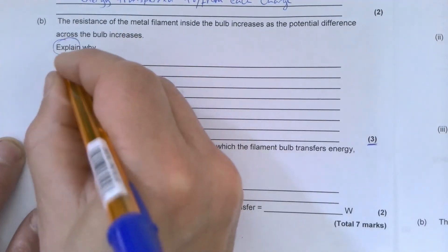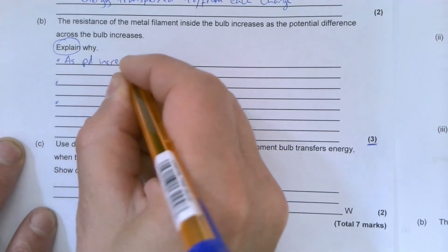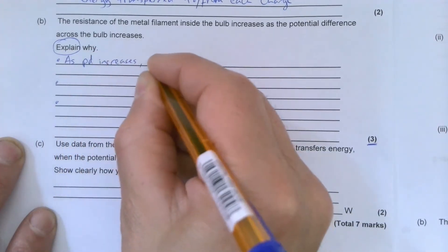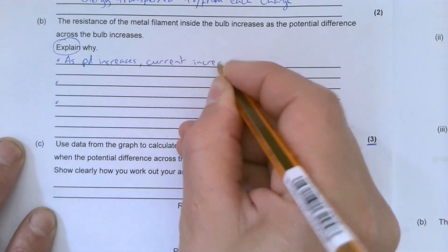So as the potential difference increases, why does the resistance increase? First of all, as PD increases, current increases.